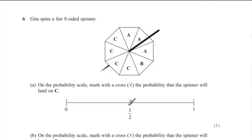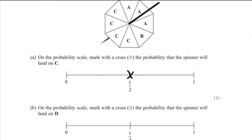Part B: on the probability scale, mark with a cross the probability that the spinner will land on D. There is no D on the spinner, so the answer is 0.